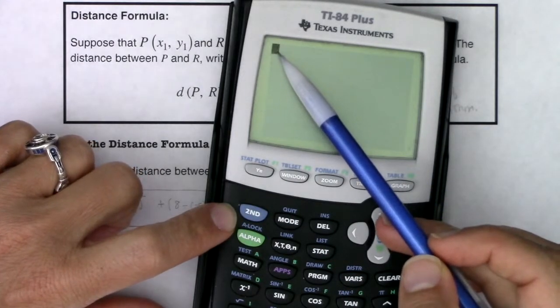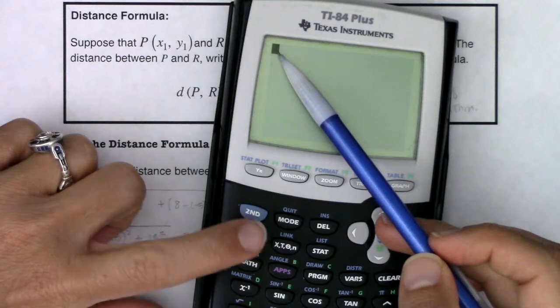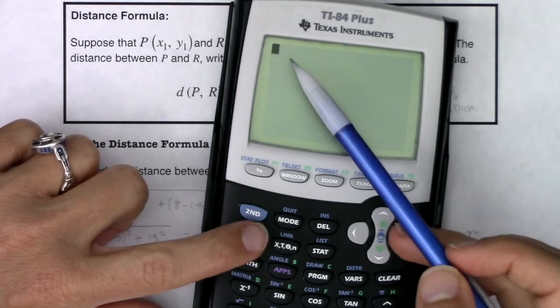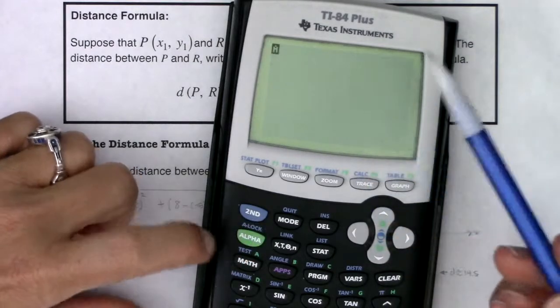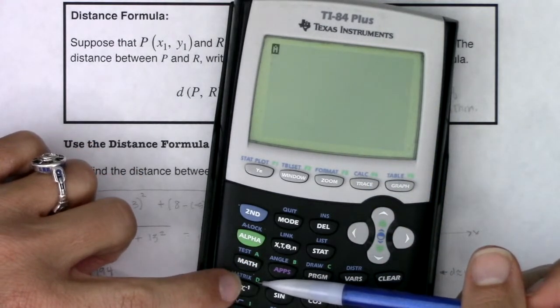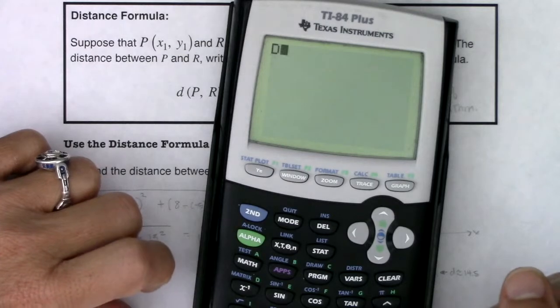Again, take note, I've got a rectangle. Now just watch, if I hit the alpha button, if I hit the green button, do you see that that turns to the letter A? That means the alpha key is locked or is activated. Now when I hit that reciprocal key, I get the letter D.